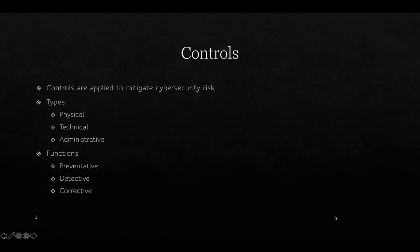Once we've identified risks through threats and vulnerabilities, we can try to treat those risks using controls. There is a tendency in many IT-led organizations to skip cybersecurity risk analysis and go straight to controls — and while that's better than nothing, it's not done on an informed basis. Controls can be of three types: physical, technical, and administrative.